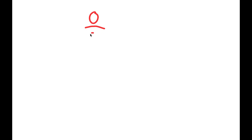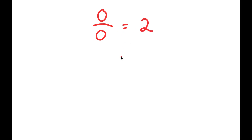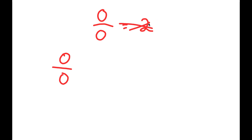All right, so in this video I'm going to be proving that 0 divided by 0 is equal to 2. So how am I going to prove this? Well, let's first start by writing out 0 over 0. We're going to ignore the 'equals 2' for a moment and just start with 0 over 0.